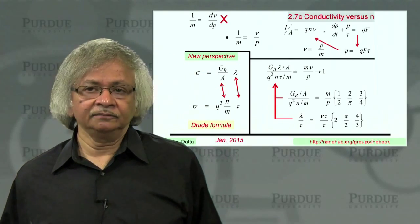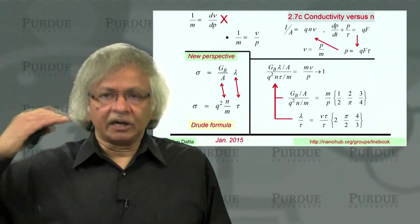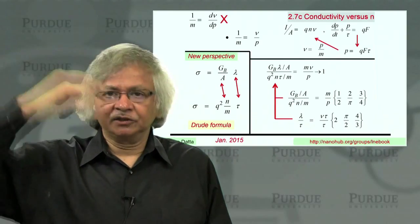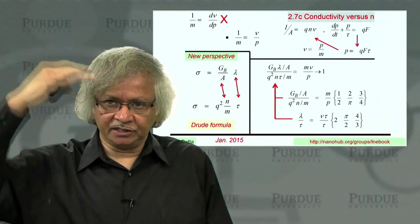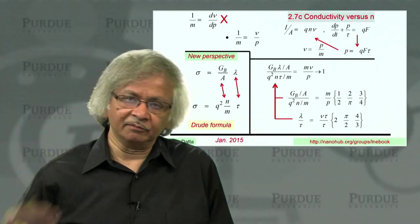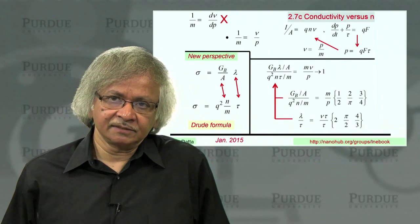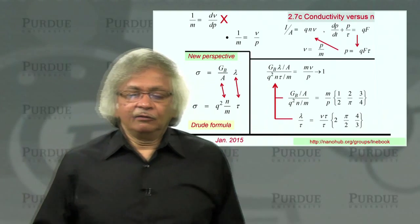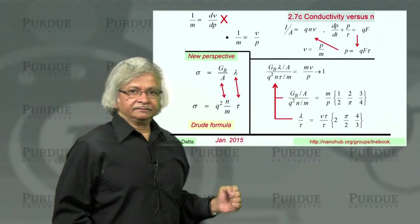And in general, for non-parabolic bands, that answer can depend on at what energy you are because the mass will keep changing with energy because velocity to momentum ratio will not be a constant. And when using the Drude formula then, you have to worry about that.